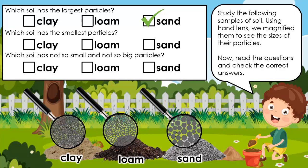Which soil has the smallest particles? Clay, loam, or sand? Clay. You got it right. Which soil has not so small and not so big particles? Clay, loam, or sand? Loam. You're amazing.